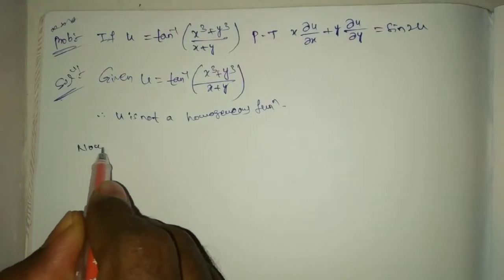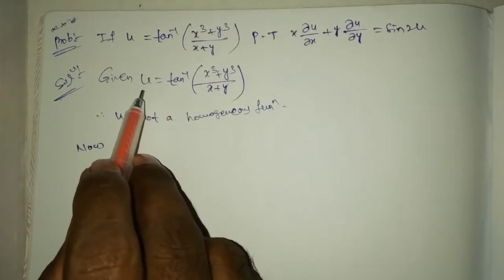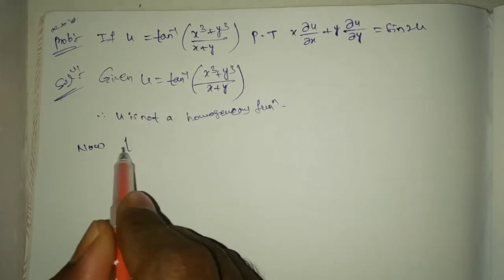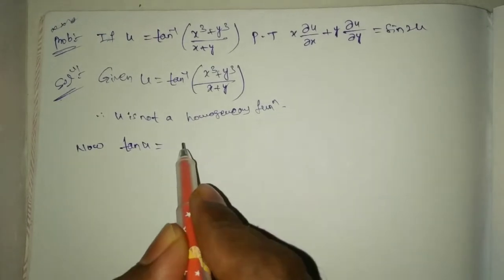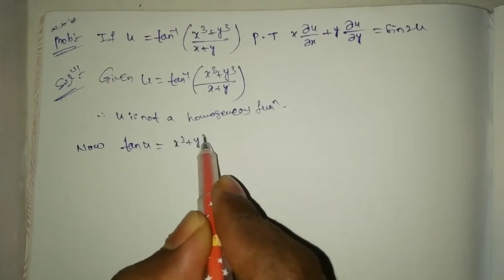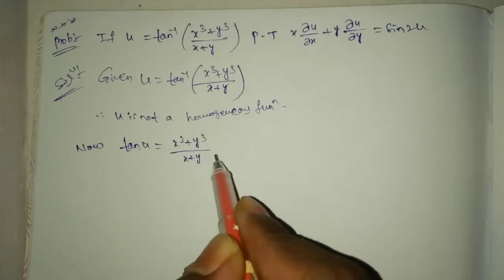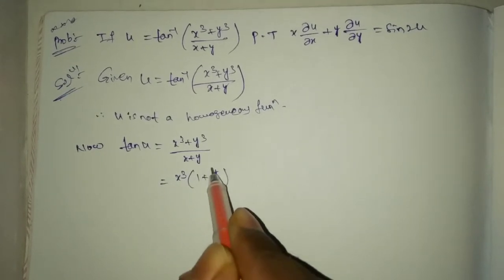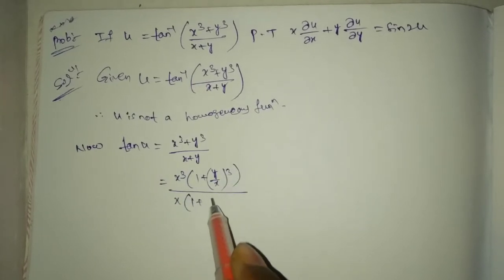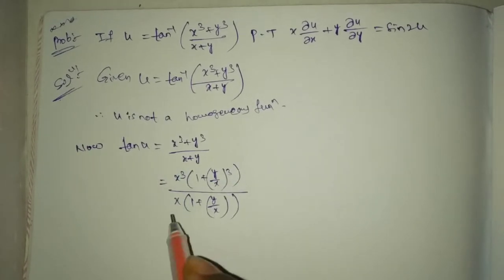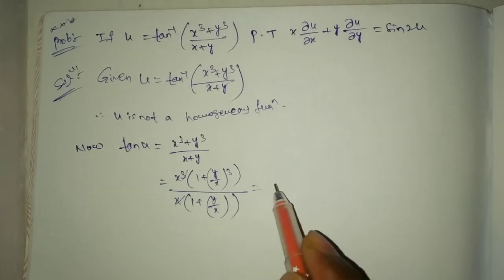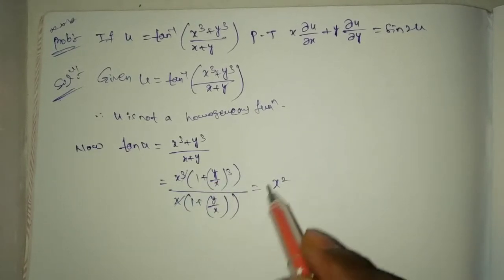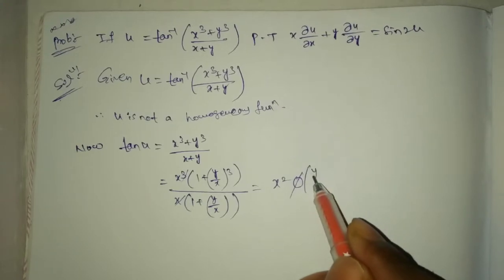Now this tan is taken to left side. tan u equal x cube plus y cube by x plus y. x cube common here, 1 plus y by x whole cube. x common here, 1 plus y by x. x cancel here, x square. This function is of the form phi of y by x.